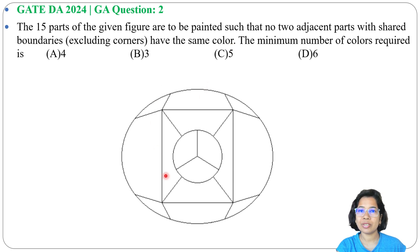This means their boundary is not shared but corners can be shared. If one color is here, the same color can be there, but boundaries will not be the same. The minimum number of colors required is - and 4 options are given.